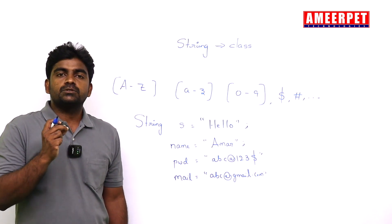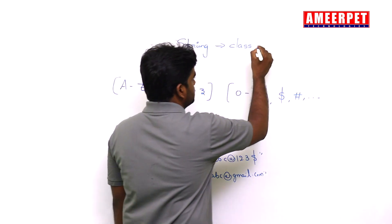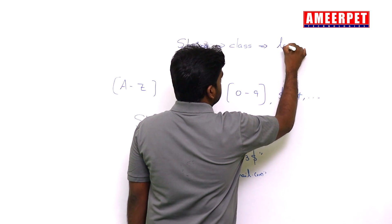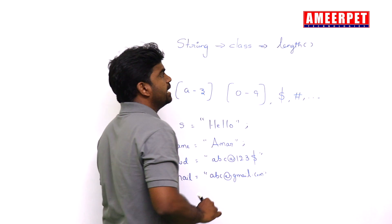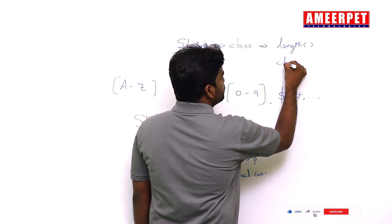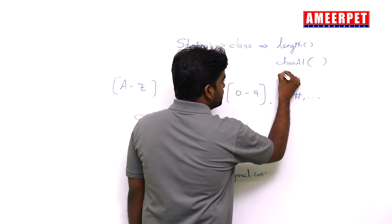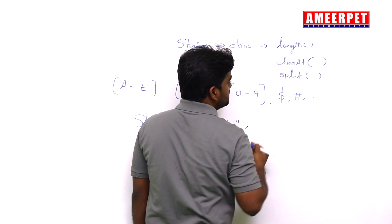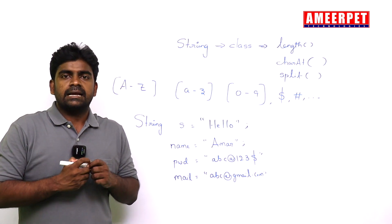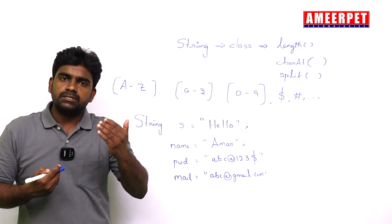So it is providing so many methods to work with the strings. So many methods are there. For example, length is one method just to find the length of the string. If you want to display character at specified index, charAt method. If you want to split the string by specifying that delimiter, any symbol, we can use a split. Like that, so many methods are there. You know that class contains methods, right? By using the object, nothing but by using that string object, we can access all the methods.